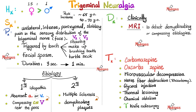Trigeminal neuralgia is most common in females than males. The peak incidence is about 65 years of age, with first presentation usually between ages 40 and 70. Symptoms include unilateral, intense, paroxysmal pain — meaning it comes in attacks — with repeated stabs of pain in the sensory distribution of the trigeminal nerve, particularly V2 and V3. This pain is triggered by touch: shaving, applying makeup, brushing teeth, or wearing a turtleneck. Some patients have painful facial spasms, which is why the old name was tic douloureux — 'tic' meaning spasm and 'douloureux' from dolor meaning pain. The duration of pain ranges from 3 seconds up to 1 minute.